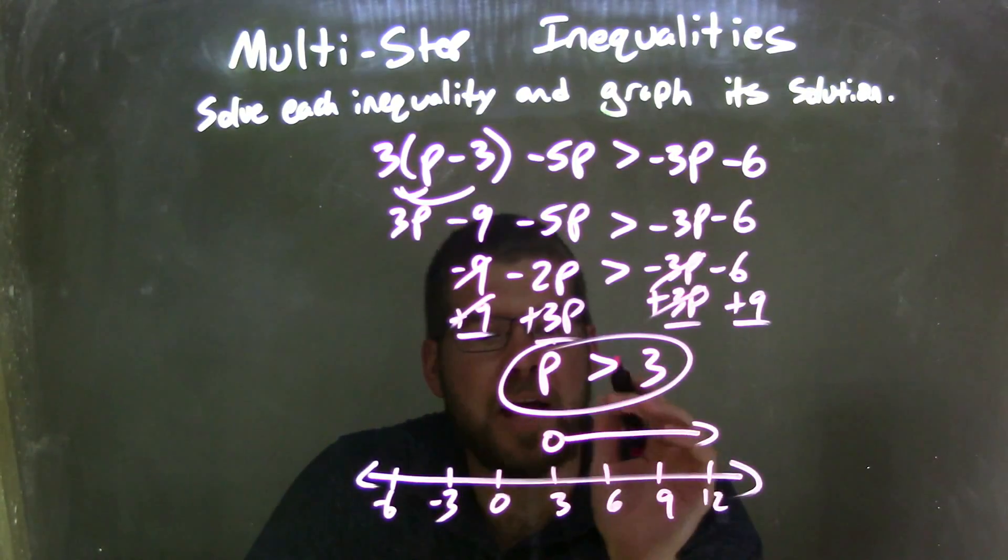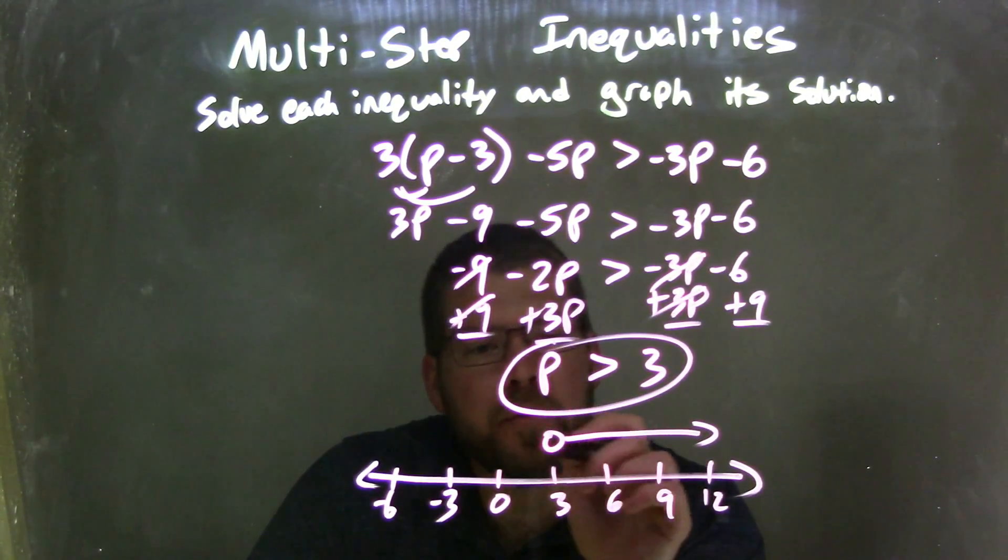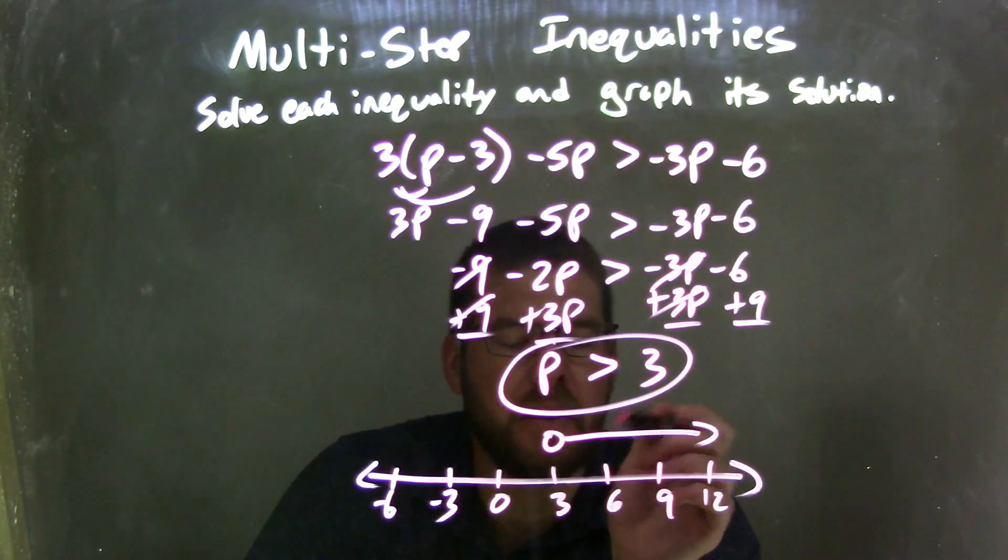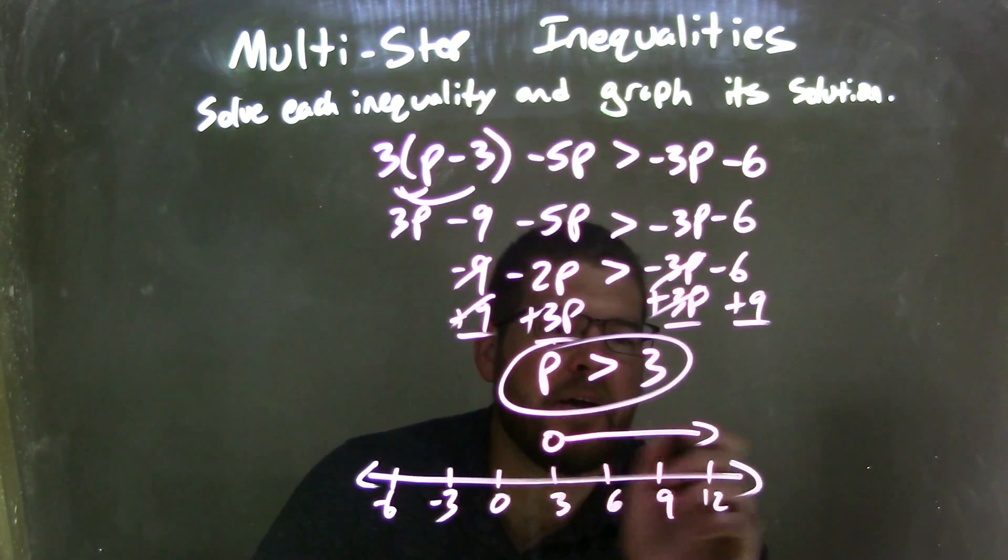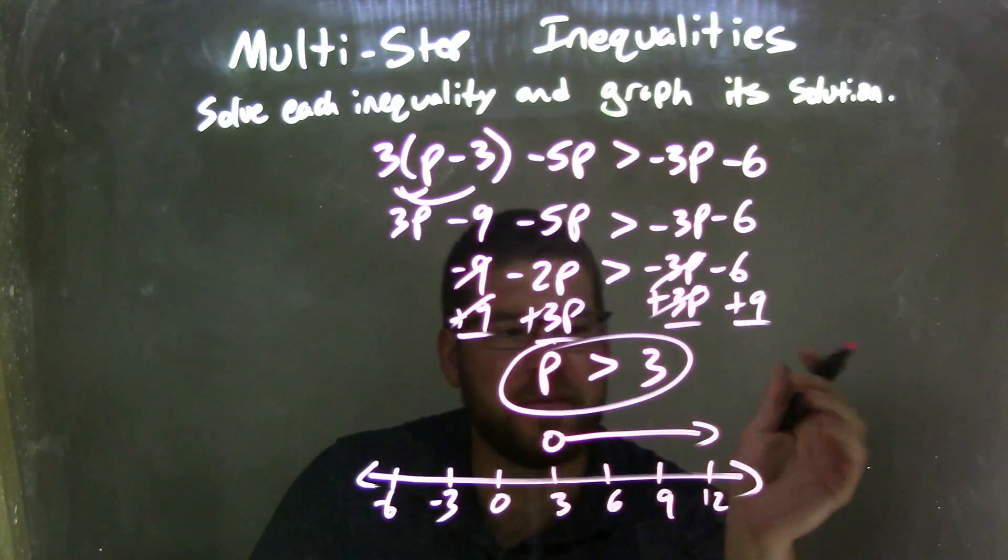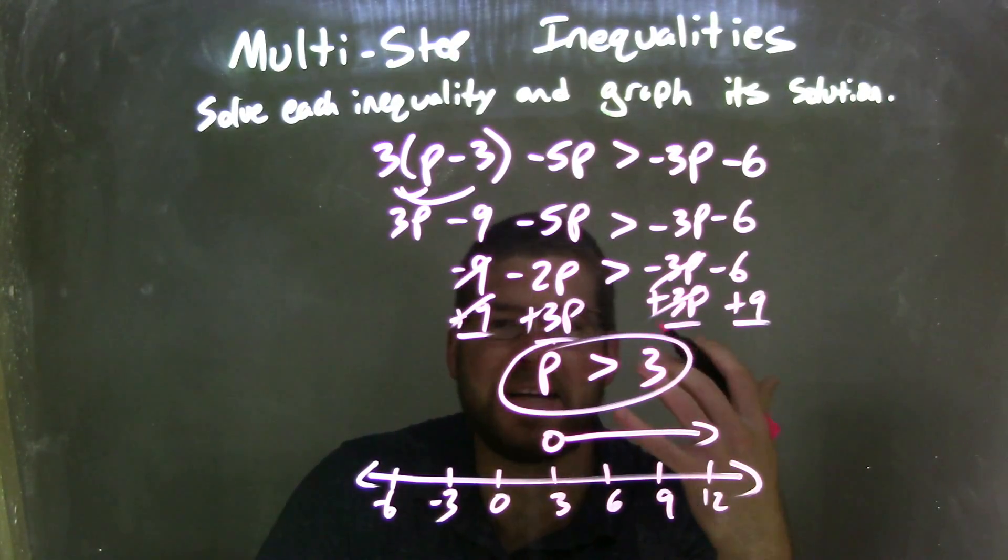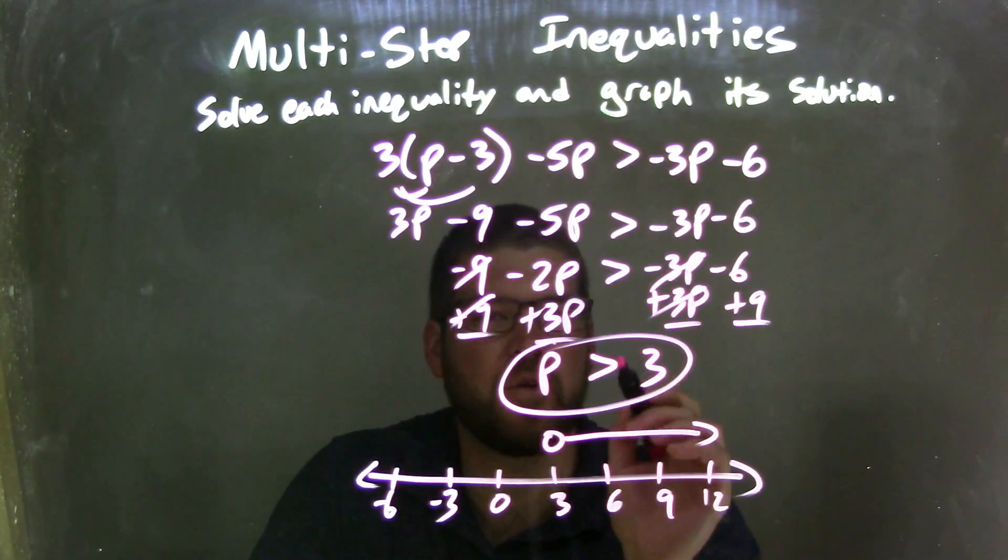Fantastic. That looks great. So now we can graph it here. We have an open circle at 3 because p cannot equal 3, so an open circle there. And then we put our arrow to the right because p is greater than 3. So now we have a graph here that matches our final answer, which is p is greater than 3.